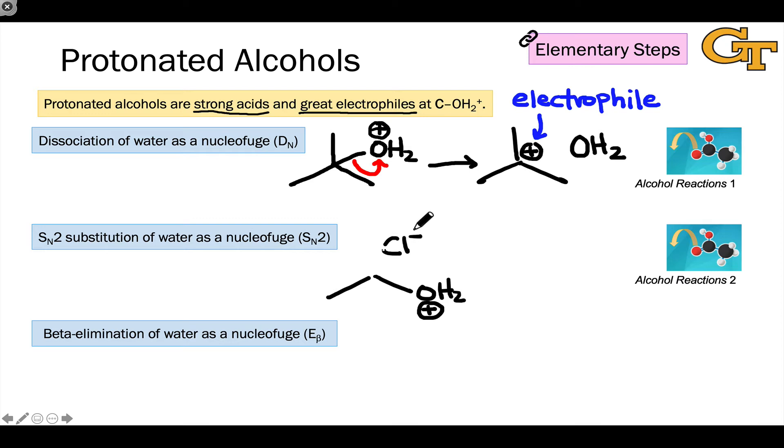For example, a halide anion can come in and displace OH2 plus in an SN2 elementary step. This establishes a new bond between the electrophilic carbon and the nucleophile. And again, water is kicked off as a leaving group or nucleofuge.